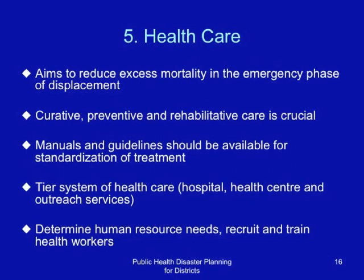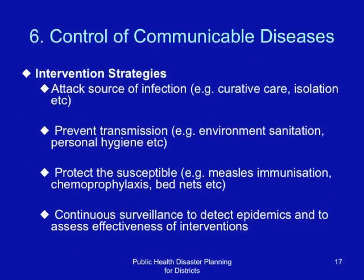Control of communicable diseases is very important during complex emergencies. Intervention strategies include attacking the sources of infection, like curative care and isolation of highly infectious persons. Prevent transmission through environmental sanitation, personal hygiene, and health education. Protect susceptible persons through measles immunization, chemoprophylaxis for selected diseases, and provision of bed nets. There is need for continuous surveillance to detect epidemics and to assess effectiveness of interventions.